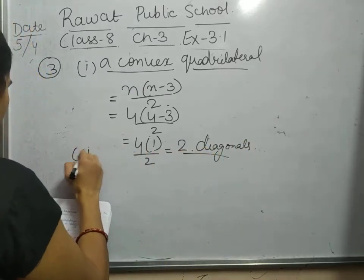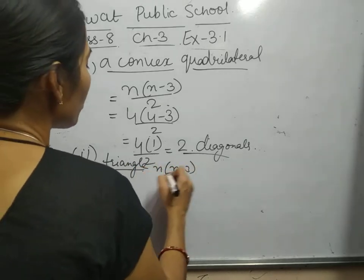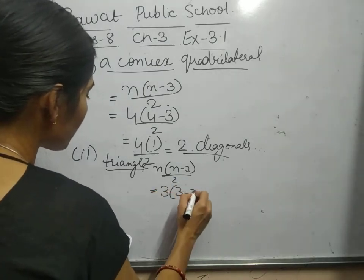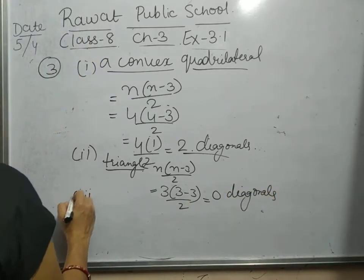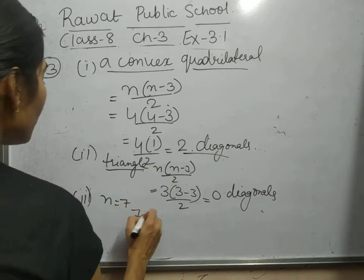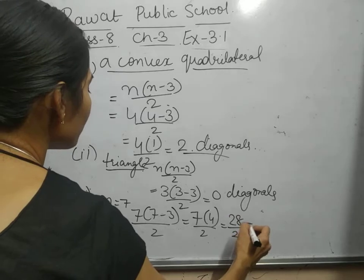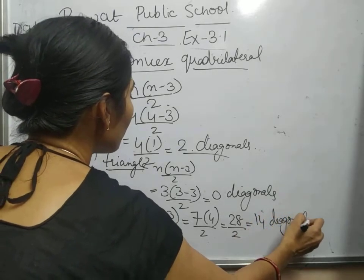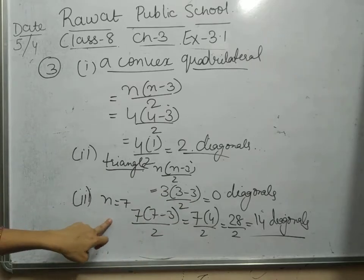For a triangle (n=3): 3×(3−3)/2 = 0 diagonals. A triangle has no diagonals. For a regular heptagon (n=7): 7×(7−3)/2 = 7×4/2 = 28/2 = 14 diagonals. So: quadrilateral has 2 diagonals, triangle has 0 diagonals, and heptagon has 14 diagonals.